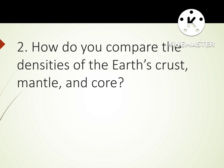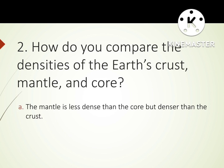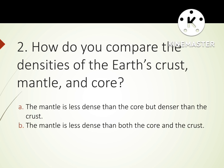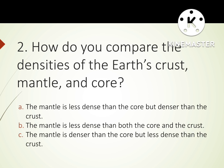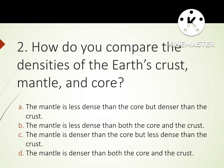Number 2 question: How do you compare the densities of the earth's crust, mantle, and core? A. The mantle is less dense than both the core and the crust. B. The mantle is denser than the core but less dense than the crust. C. The mantle is denser than both the core and the crust. D. The mantle is less dense than the core but denser than the crust. The correct answer is D: The mantle is less dense than the core but denser than the crust.